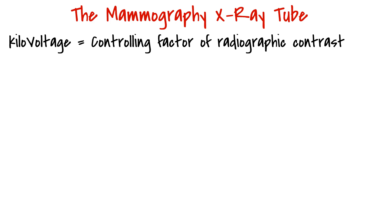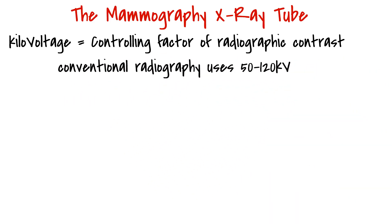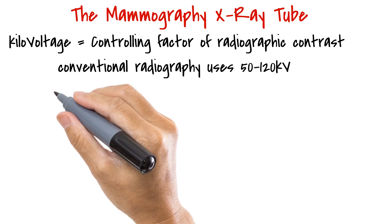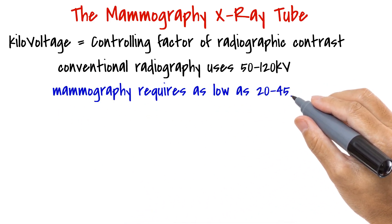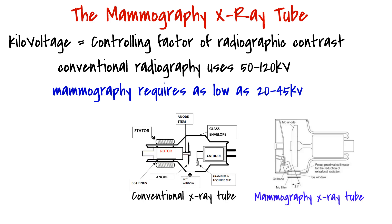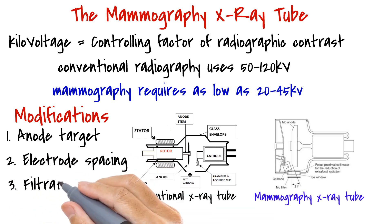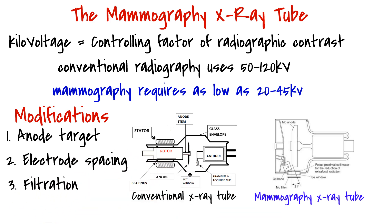Conventional radiography equipment produces X-ray beams of between 50 and 120 kilovolts. In mammography, we want the kilovoltage to be as low as 20 kilovolts. Conventional X-ray tubes are not designed to produce X-ray beams with kilovoltage this low. Thus, modifications are made to the conventional X-ray tube. These modifications are majorly seen in the anode target, electrode spacing, and filtration of the X-ray tube.